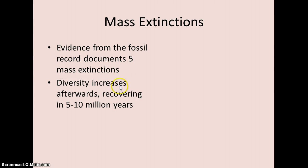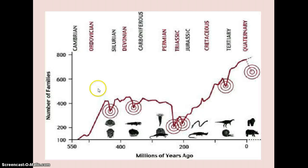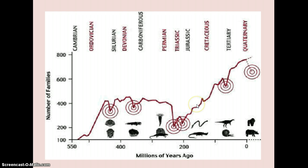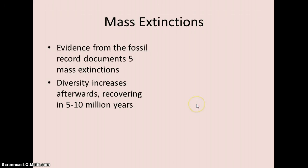After these mass extinctions, geologically speaking, it doesn't take long for diversity to bounce back. Although the Permian extinction was a big one and it did take a while for diversity to recover.